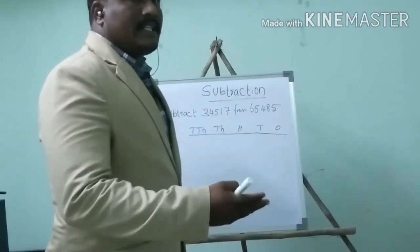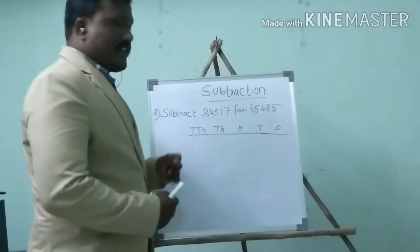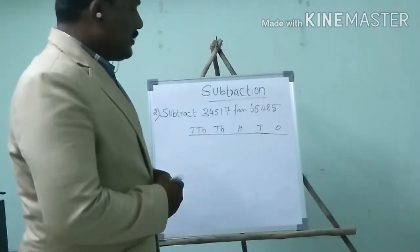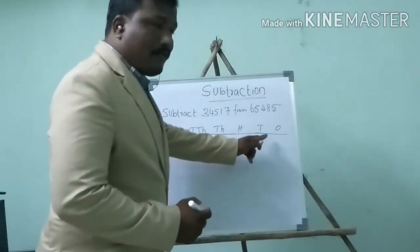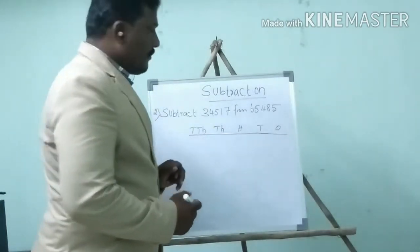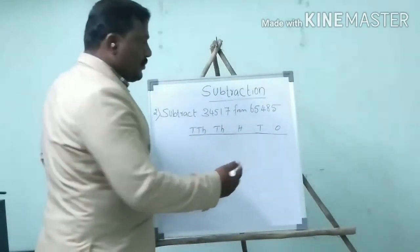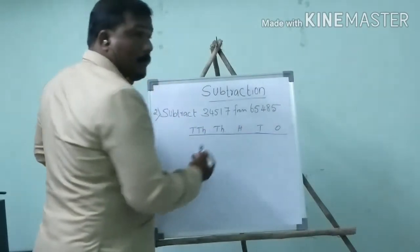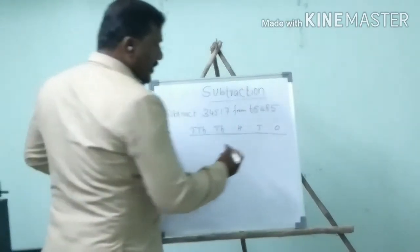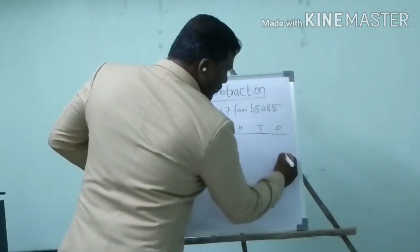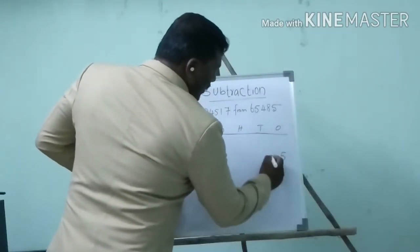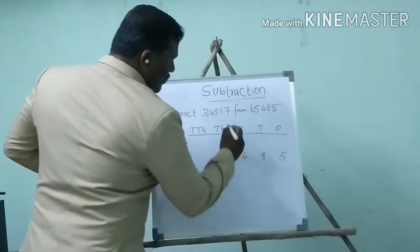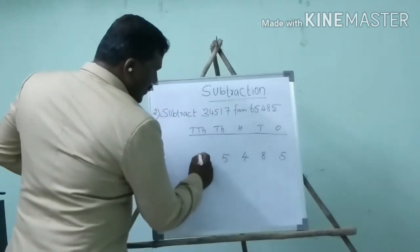Okay students, let me see the second example — it is a 5-digit number. Now we will separate. First of all, I have formed the place value table. Now I will place the values. First I will place this value — it is the minuend: 5, 8, 4, 5, 6.